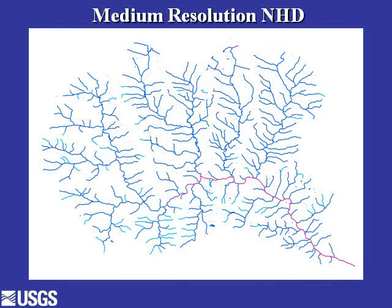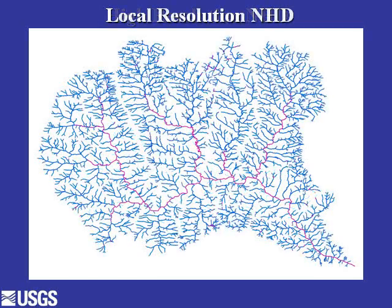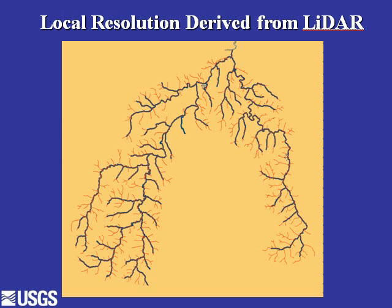We have different densities or scales of the National Hydrography Dataset. The medium resolution NHD represents 1:100,000 scale density of streams, and we also have a 1:24,000 scale representation. Many customers have asked for even more detail — what we call the local resolution NHD. One approach is to derive local resolution NHD from LiDAR data. Streams mapped from LiDAR in red are overlaid with the 1:24,000 NHD in blue; the red lines extending beyond the blue represent additional streams gatherable using LiDAR information.